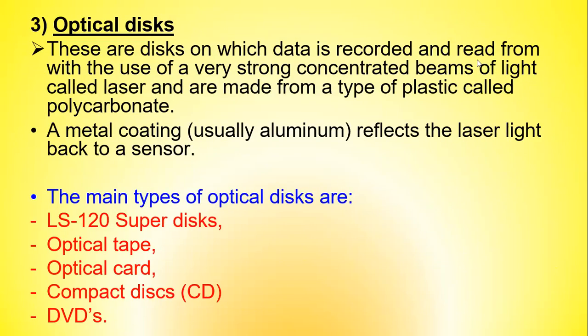Optical disks are disks on which data is recorded and read using a very strong concentrated beam of light called a laser, and they are made from a type of plastic called polycarbonate with a metal coating, usually aluminum, that reflects the laser light back to a sensor. The main types of optical disks are LS120 super disks, optical tape, optical card, compact disks, and DVDs.